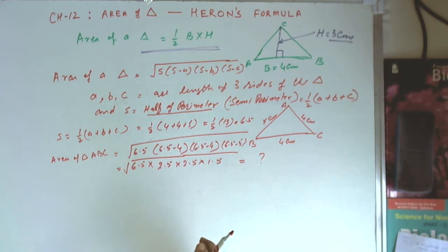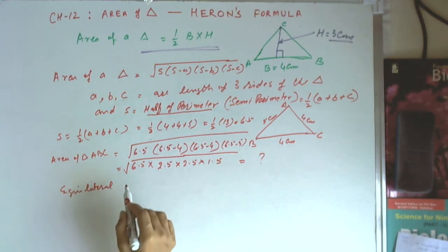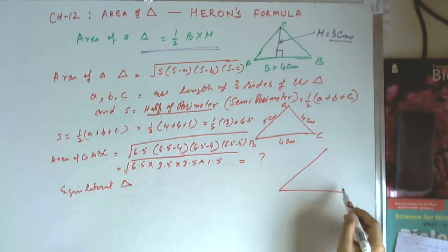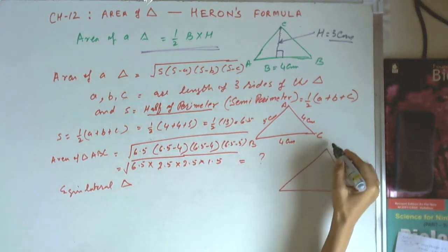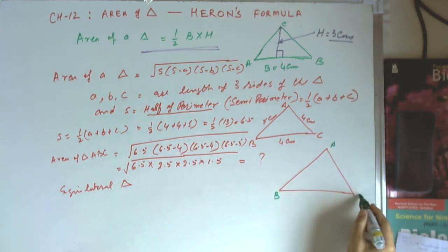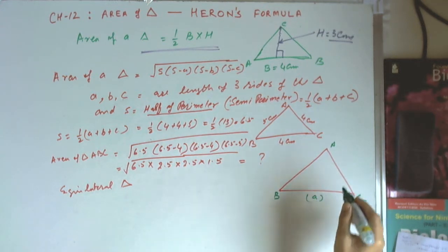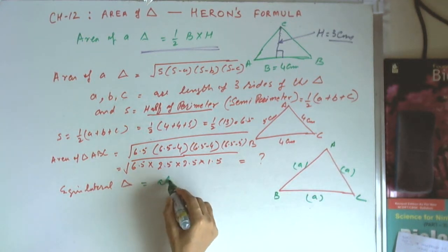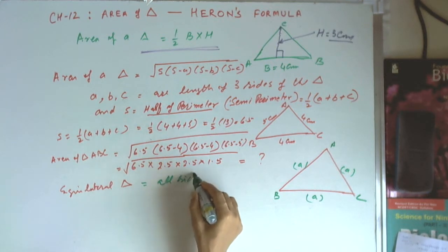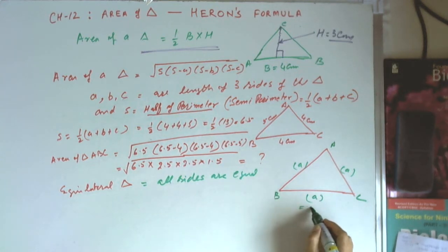Now, if it is an equilateral triangle — imagine we have an equilateral triangle ABC where each side is equal to A, because all sides are equal in an equilateral triangle. Suppose A is equal to 5 cm.